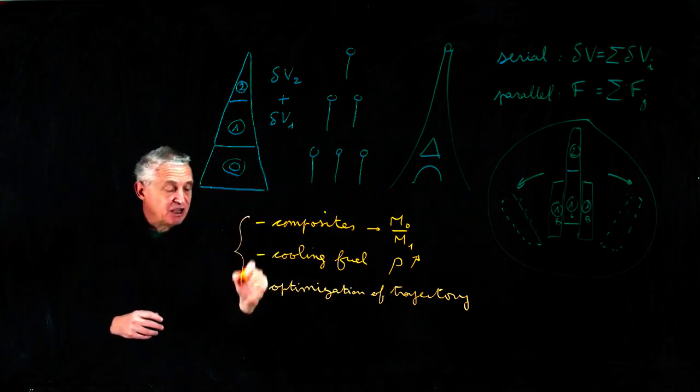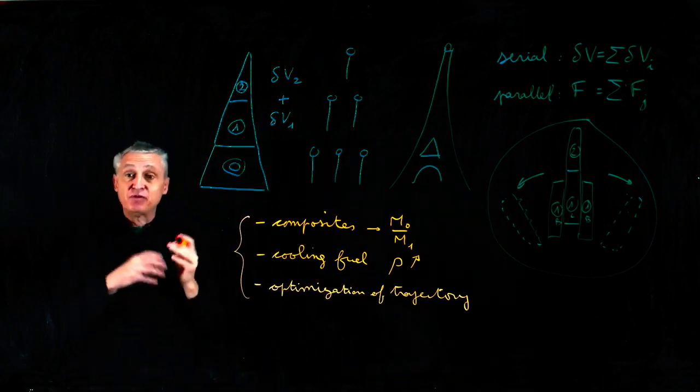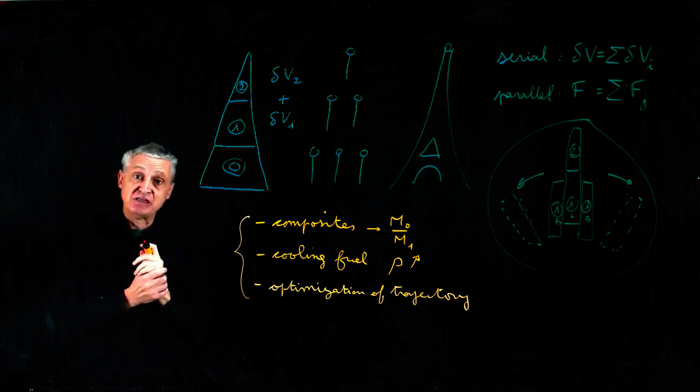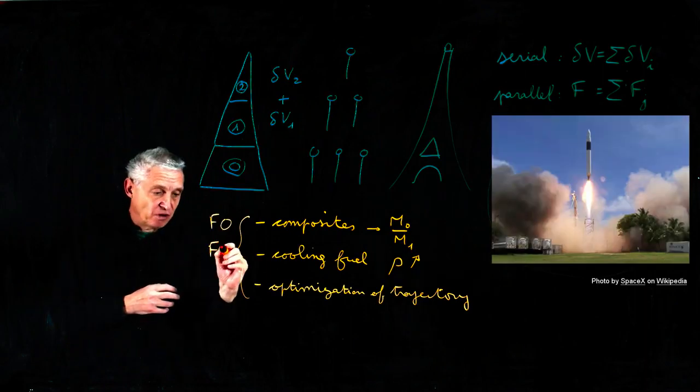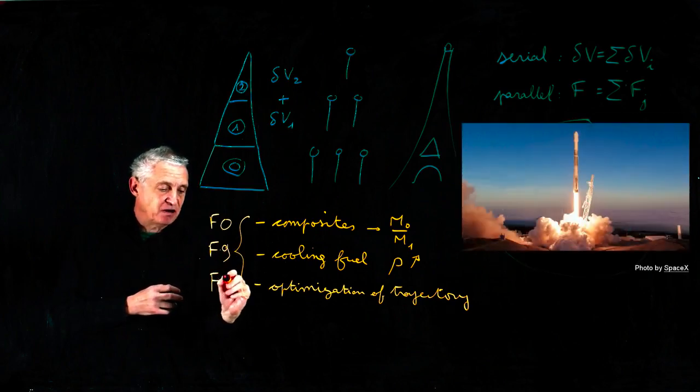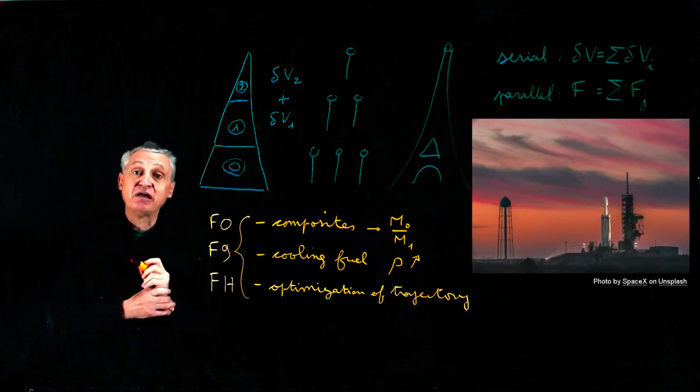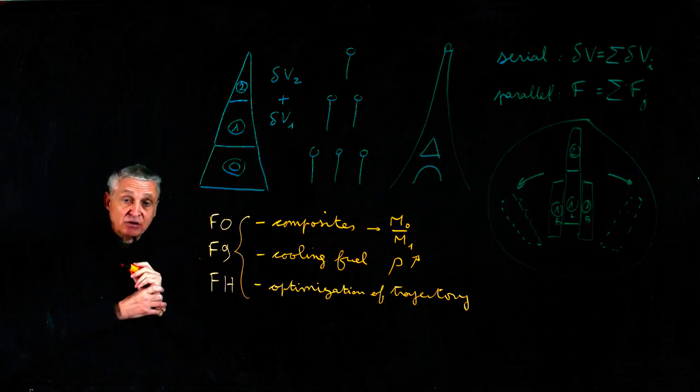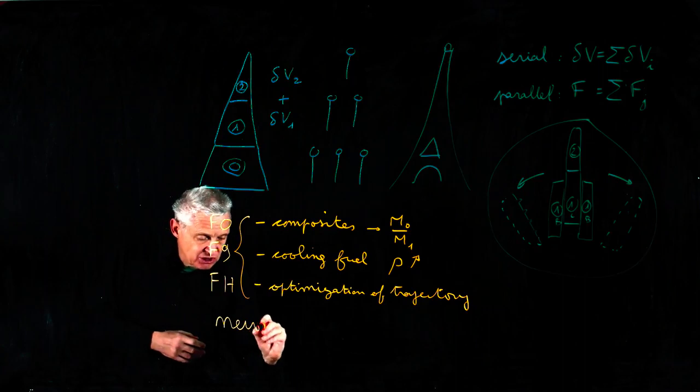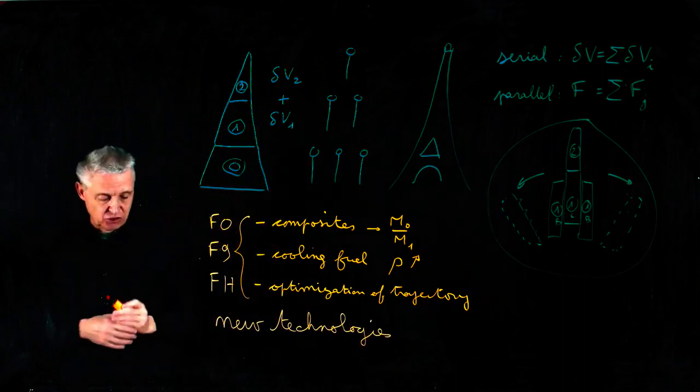And with three improvements, in fact, we have the three steps that have been followed by SpaceX with Falcon. From Falcon 0 to Falcon 9, and from Falcon 9 to Falcon Heavy. And this has required new technologies from inverse spin-off.